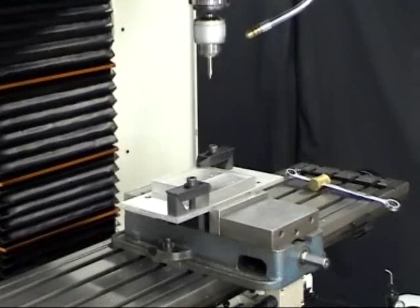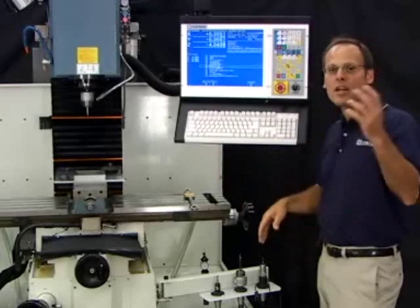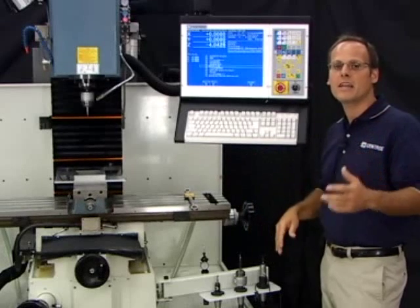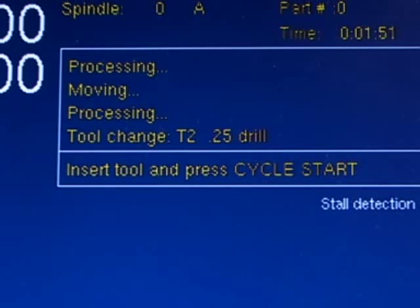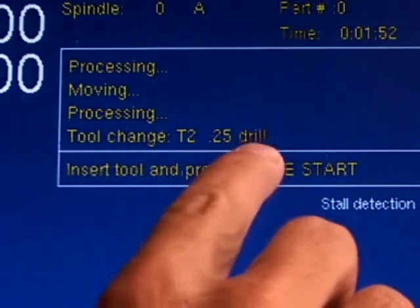Okay, there goes the last one. Now the Z-axis retracting to the tool change position again, and it's asking us to insert the second tool, the drill bit. Let's go do that.